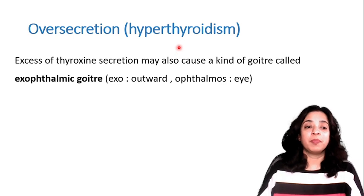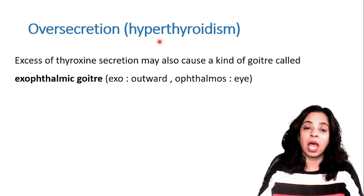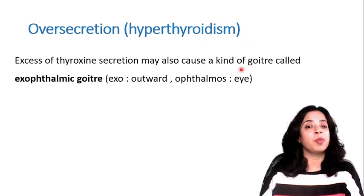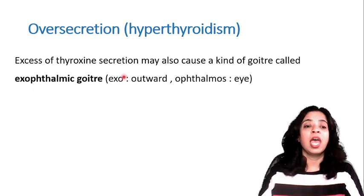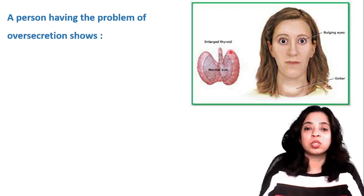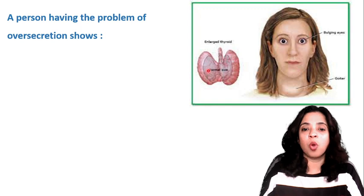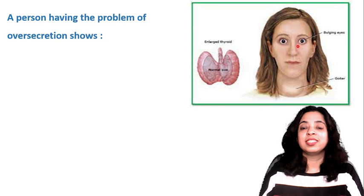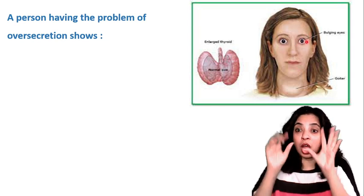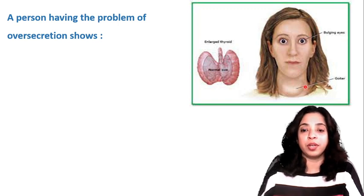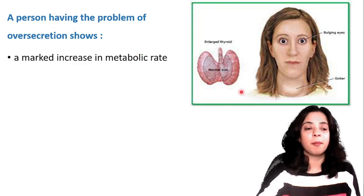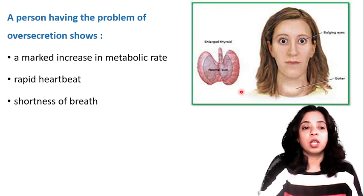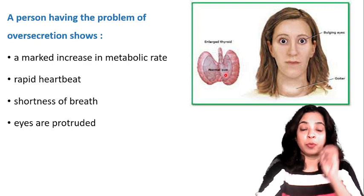Less secretion was hypothyroidism, and over-secretion is hyperthyroidism. Excess thyroxine secretion may cause a type of goiter called exophthalmic goiter — where 'exo' means outward and 'ophthalmos' means eye. The thyroid is enlarged and the eyes bulge outward. A person with this problem shows a marked increase in metabolic rate, rapid heartbeat, shortness of breath, and protruding eyes, and also forms a goiter in the neck.